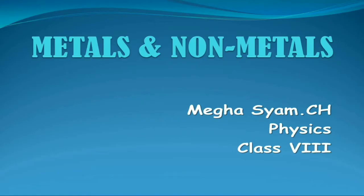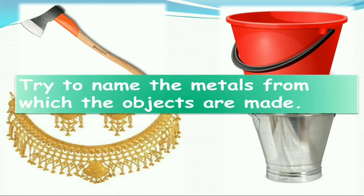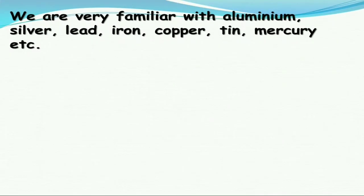Dear students, welcome to online classes. Today we are going to discuss the lesson metals and non-metals from eighth class physics. Let us look at some pictures and try to name the metals from which objects are made. Most of these materials are made from metals. We are very familiar with aluminium, silver, lead, iron, copper, tin, and mercury.